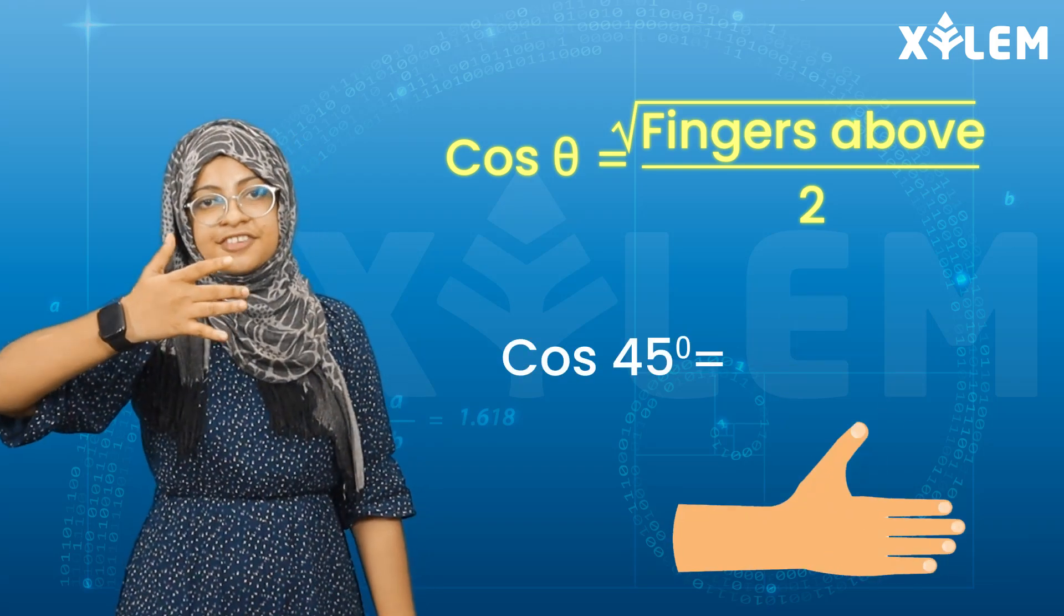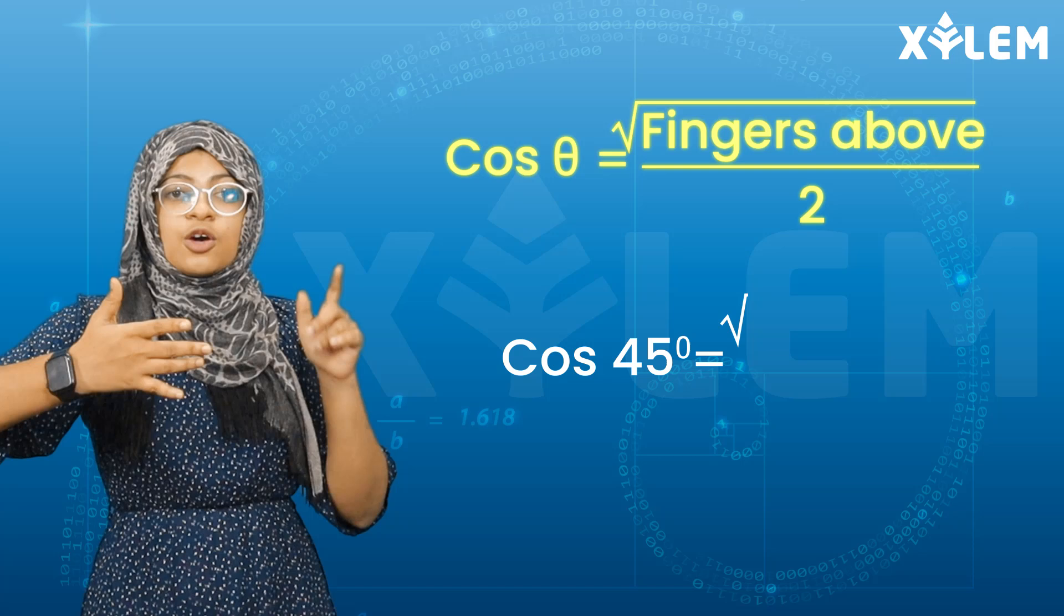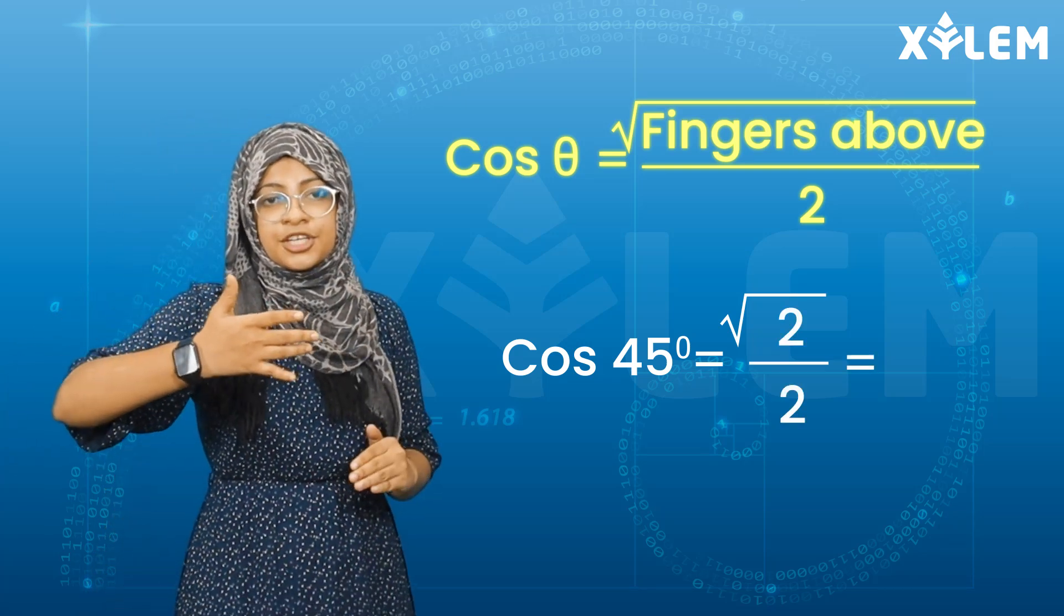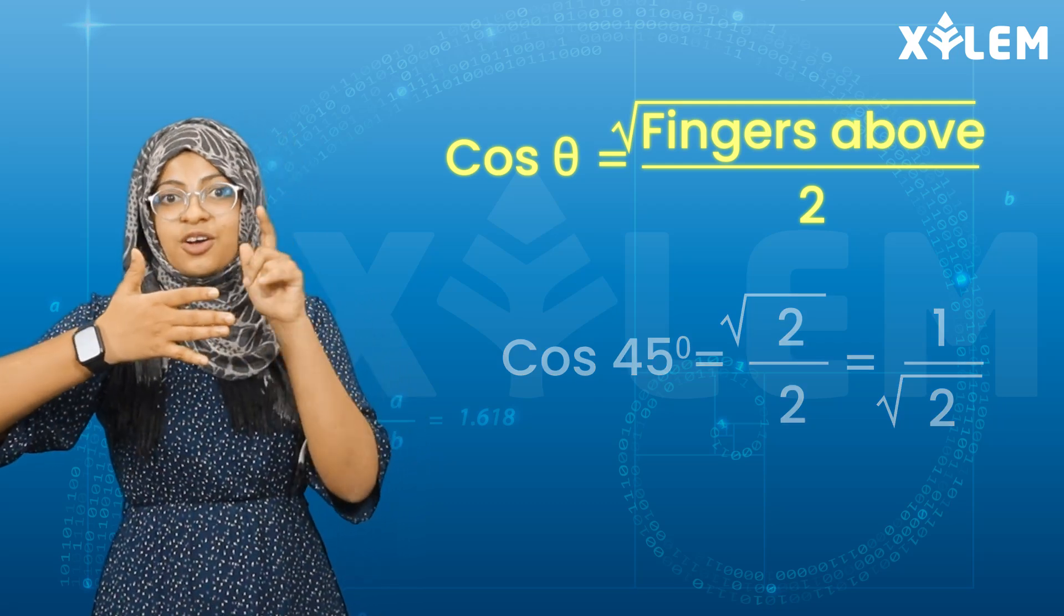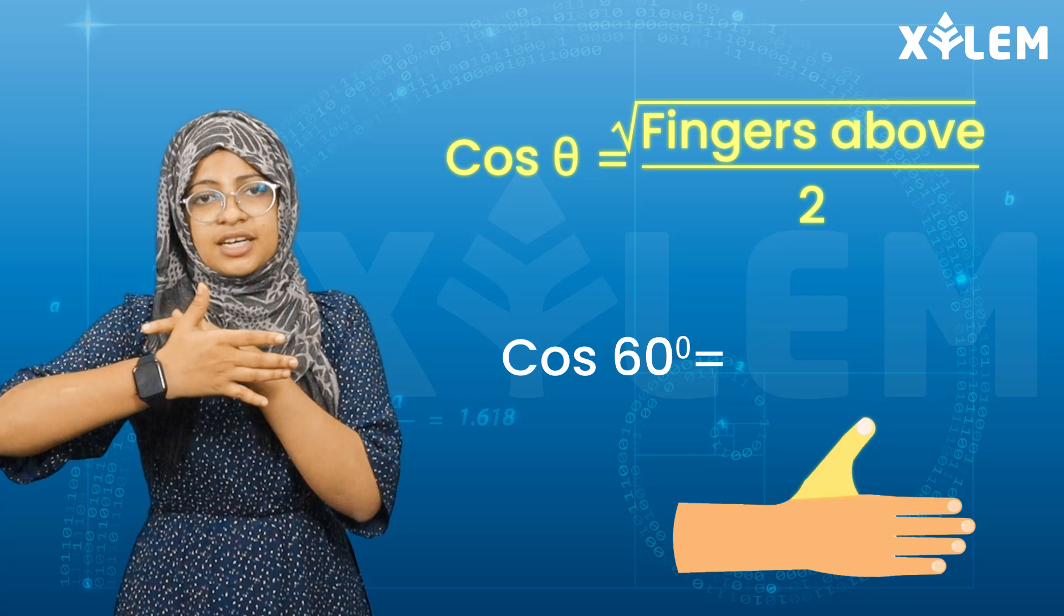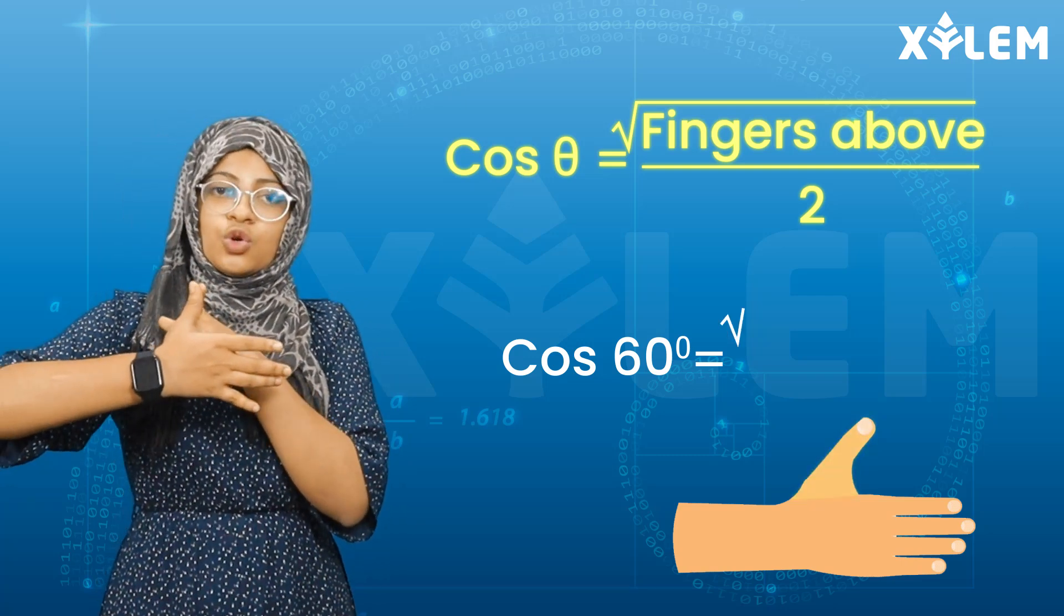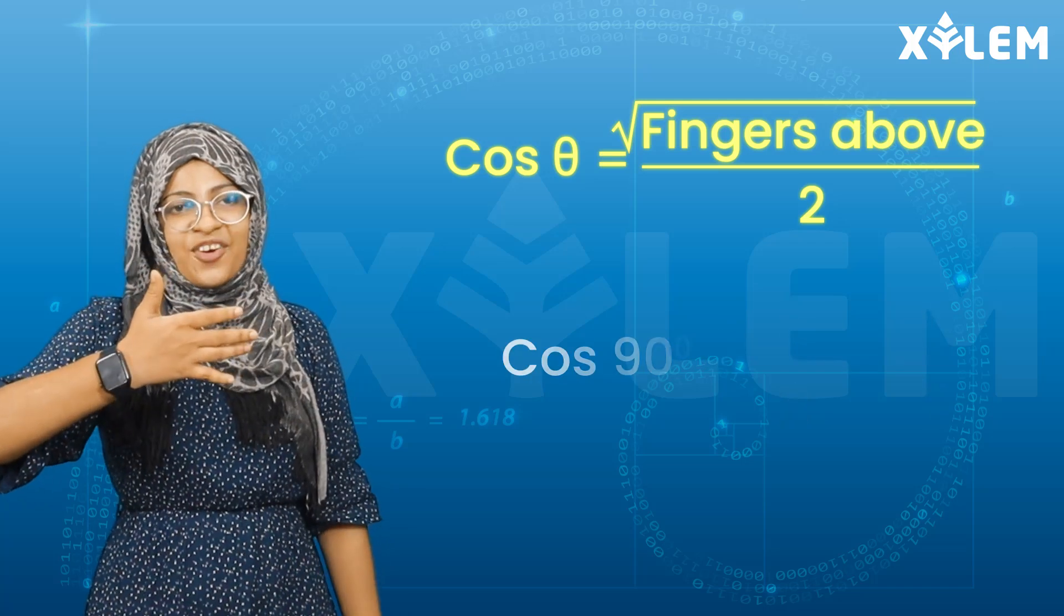Cos 45°. How many fingers are above? Two fingers. So we get root of 2 by 2, which simplifies to 1 by root of 2. Now for cos 60°. How many fingers above? One finger. So root of 1 by 2, which equals 1/2.